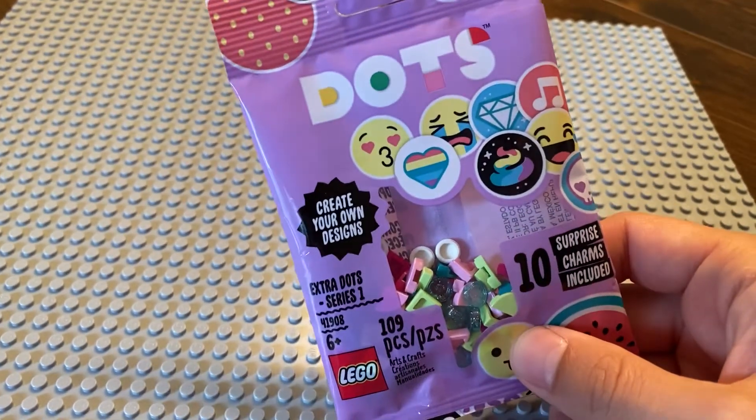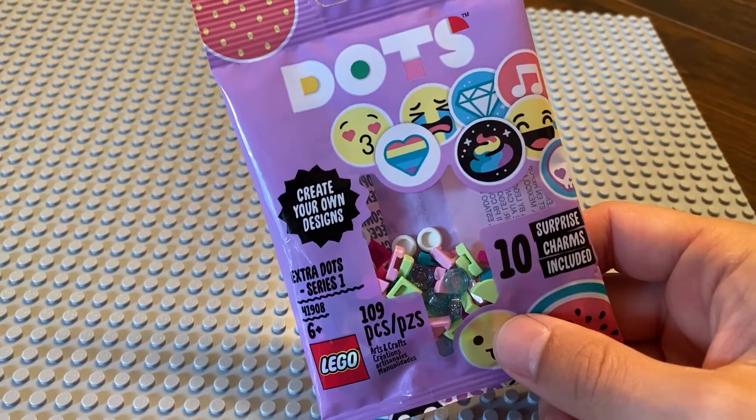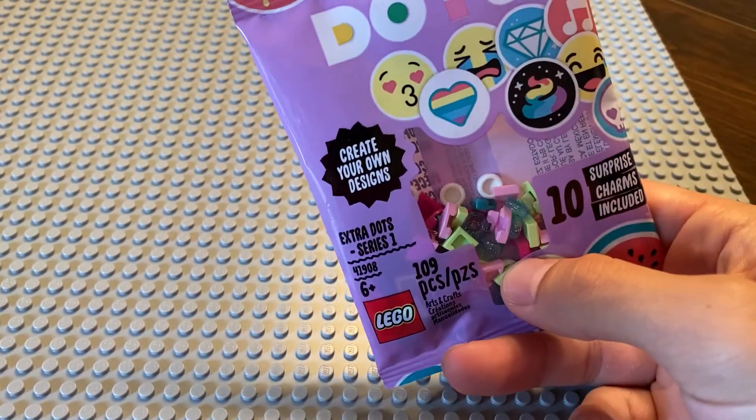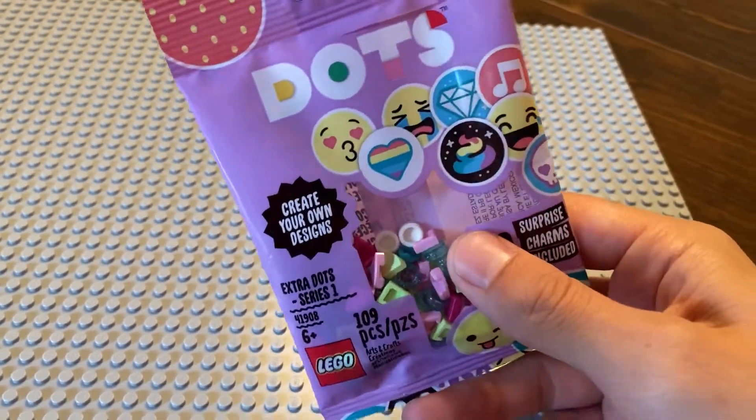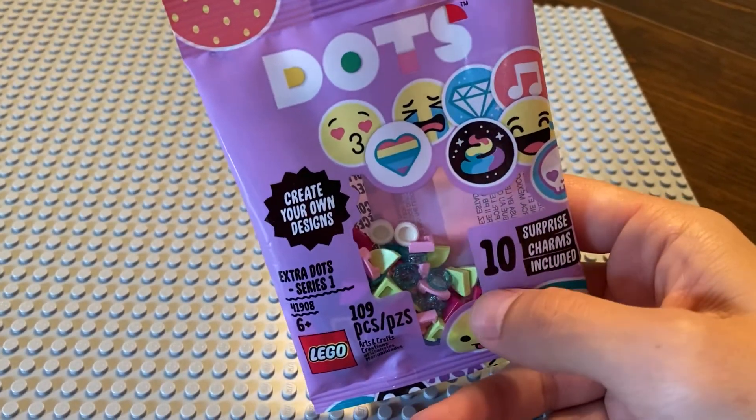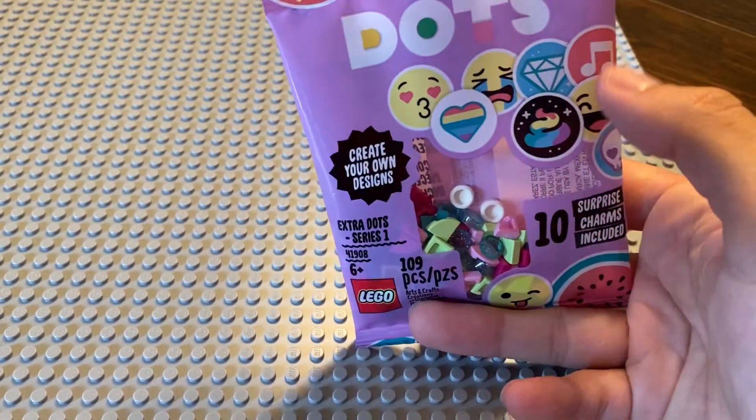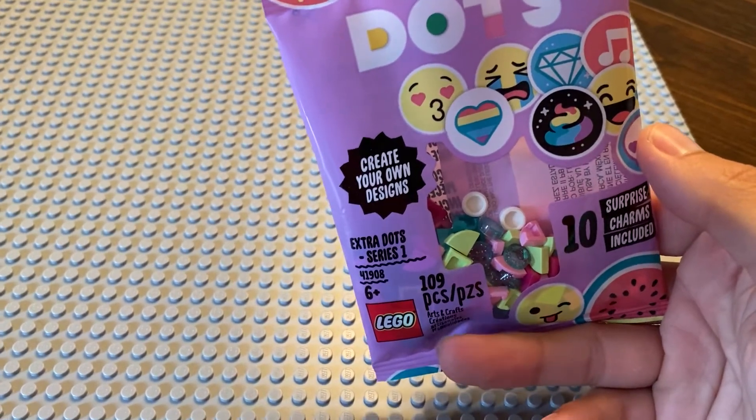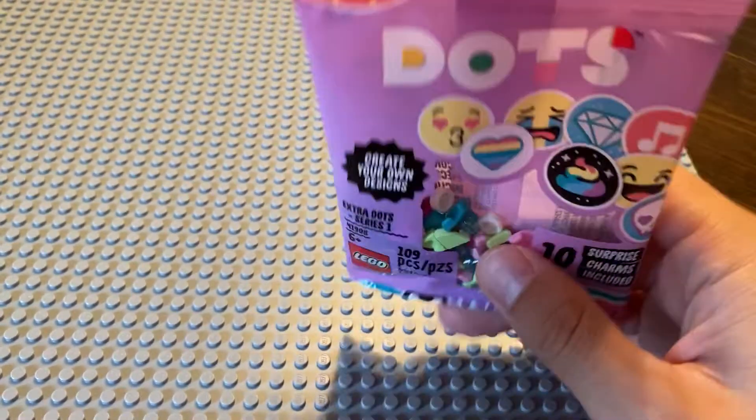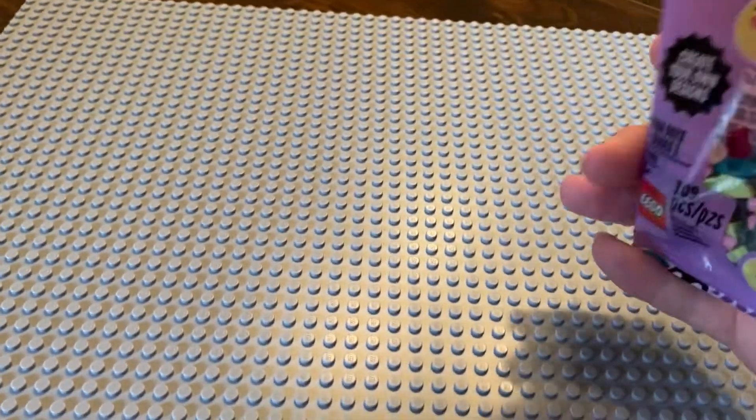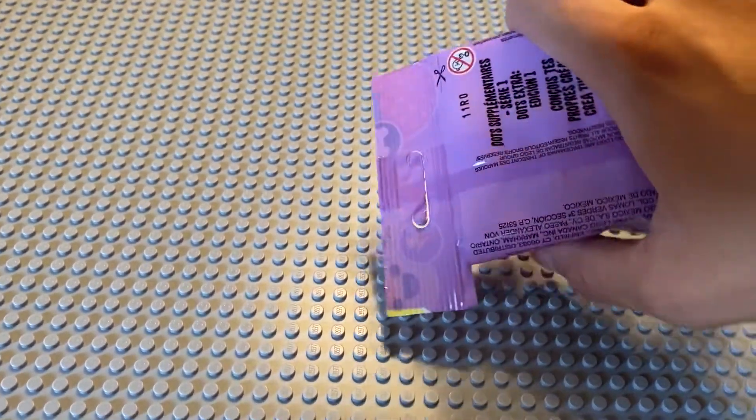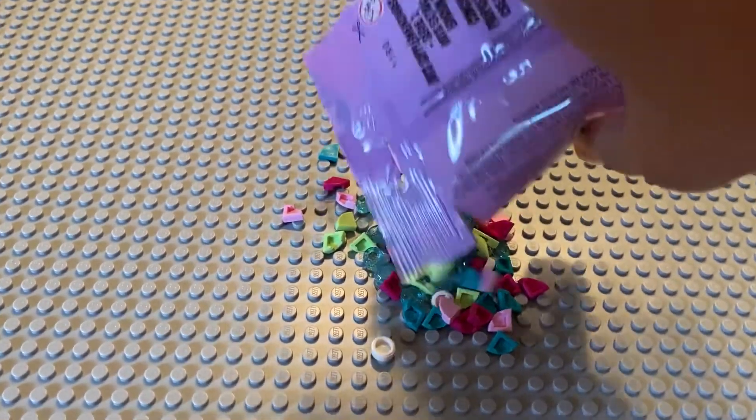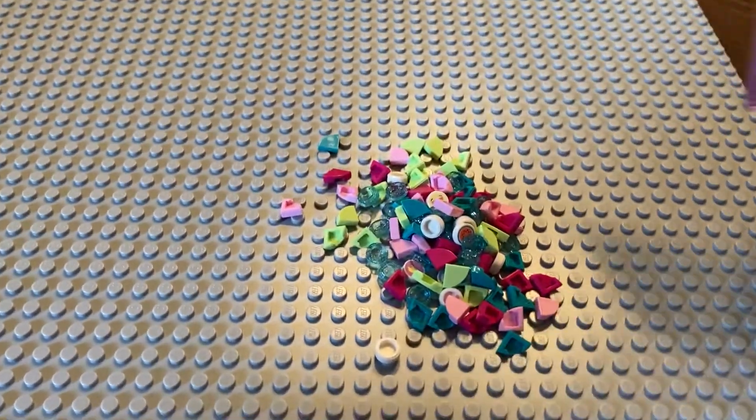I've got a third bag of the Series 1 of LEGO Extra Dots. If you look down here, the set number is 41908. I'm specifically looking for a couple of these tiles here to use for something. So I'm opening up my third bag. It's been a while since I did the first two. This is the last one I have since the LEGO shop at home only allows you to get three. And I haven't bought LEGO from a store in quite a while.